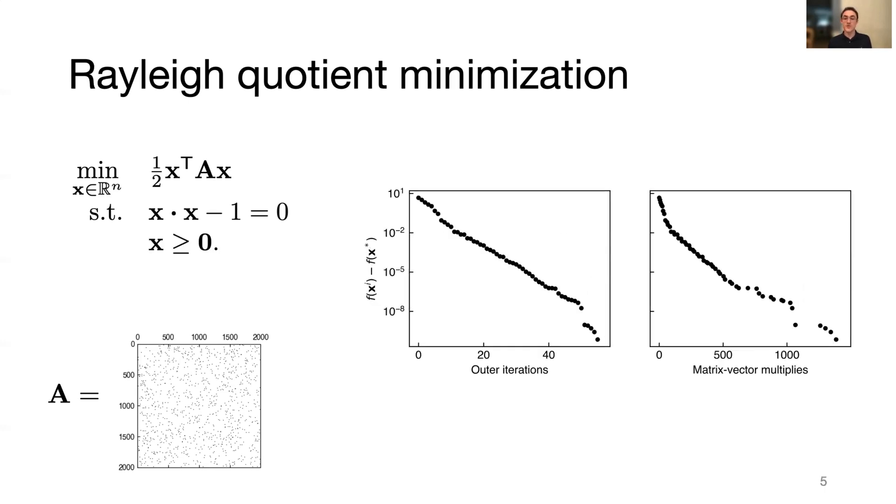One can also consider an interesting variant of the Rayleigh quotient problem where the vector is constrained to be non-negative. We see it takes 56 iterations and about 1400 matrix vector multiplies in total to converge.